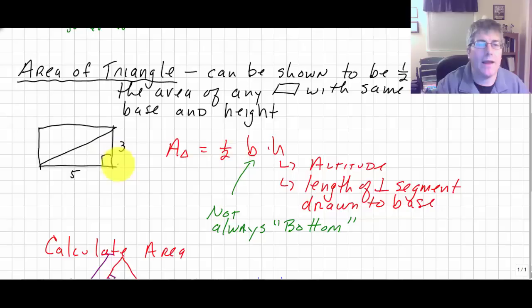So here's an example of a rectangle that's 5 by 3. Well, if we draw a diagonal in there, we have a triangle, and it's going to be half of the area of the rectangle. So the area of a triangle is one-half base times height.